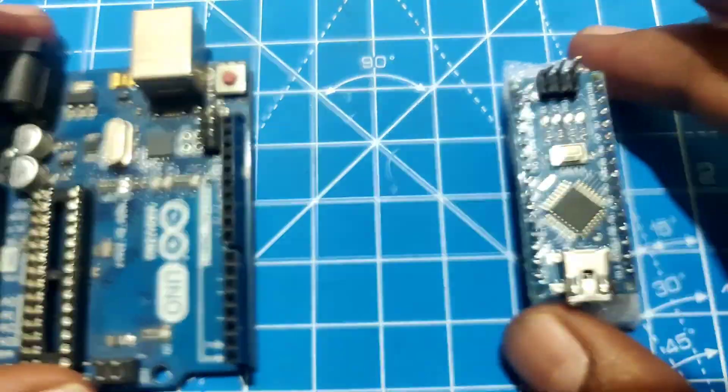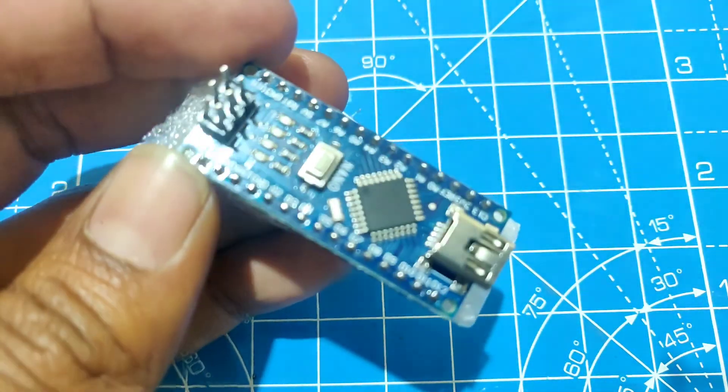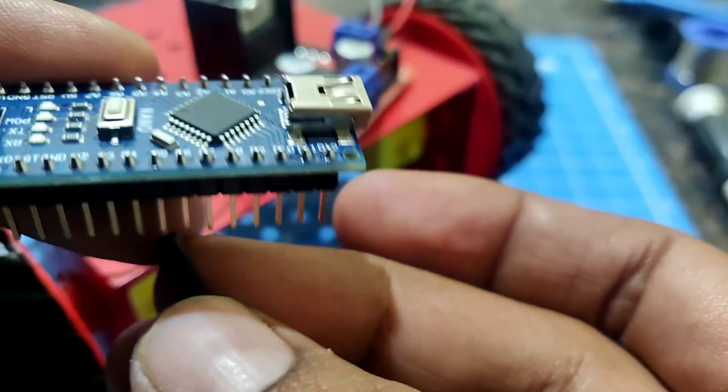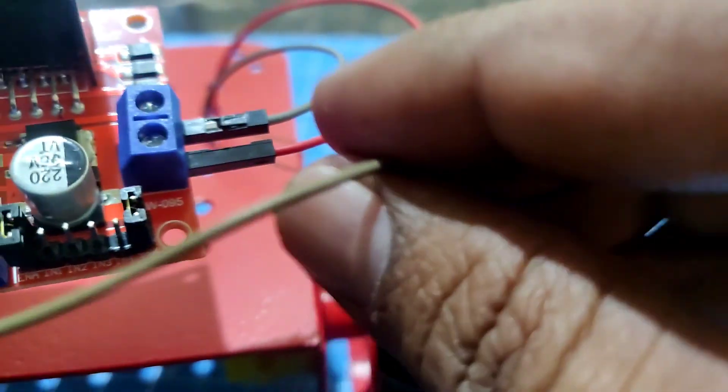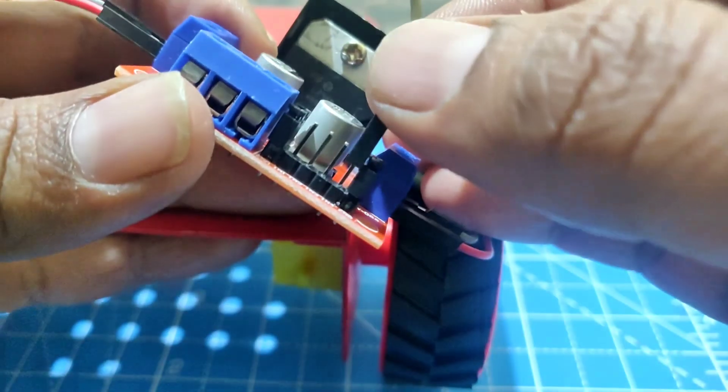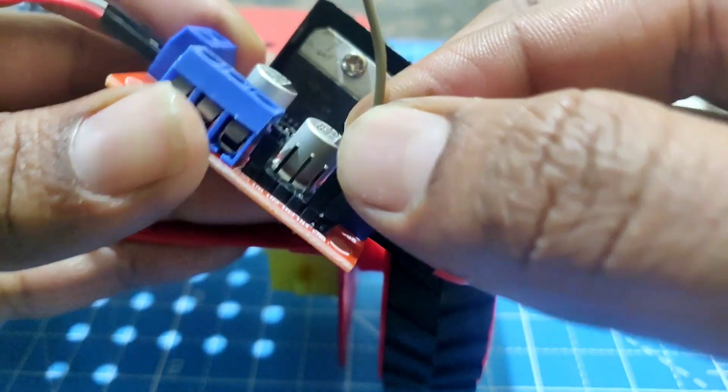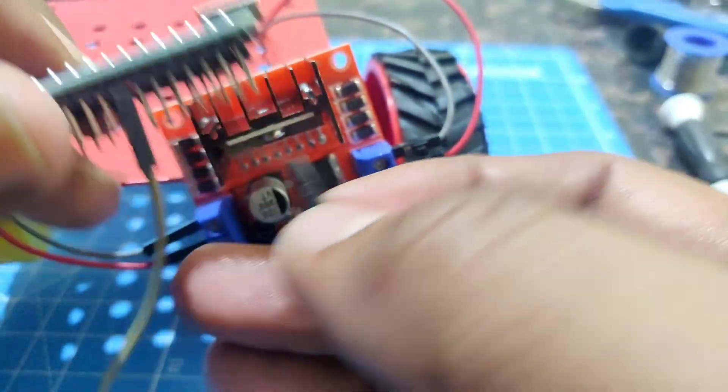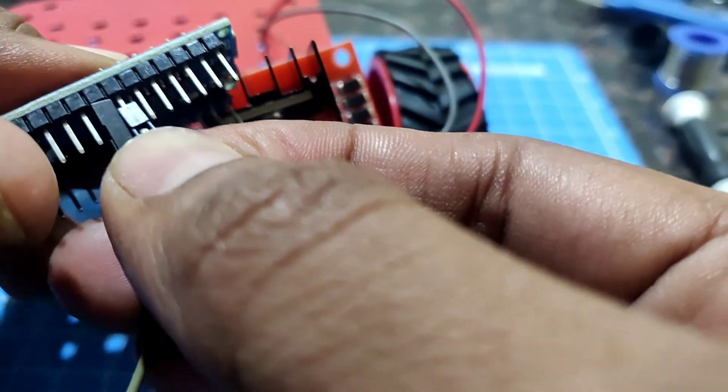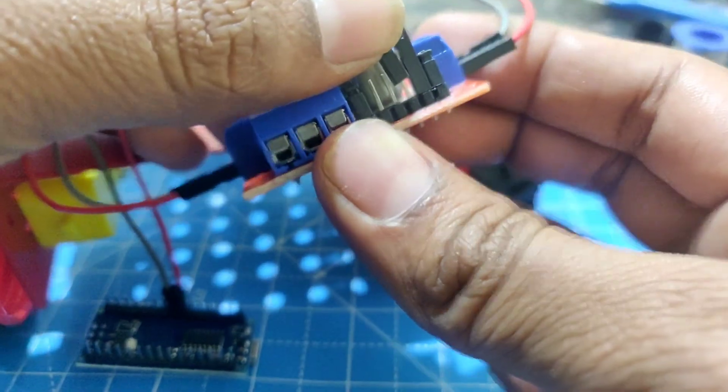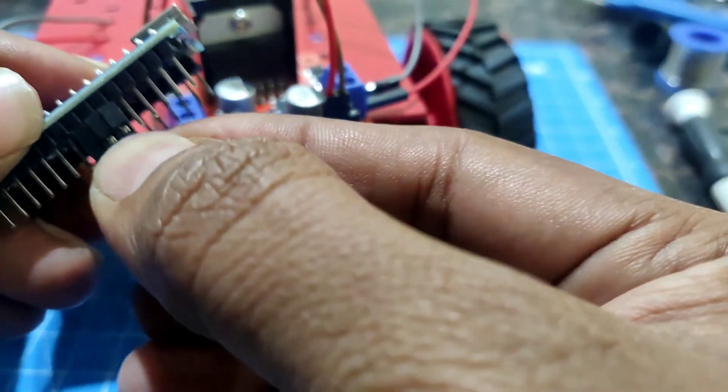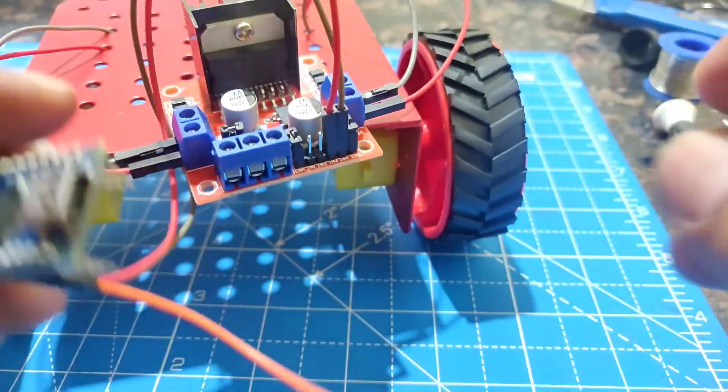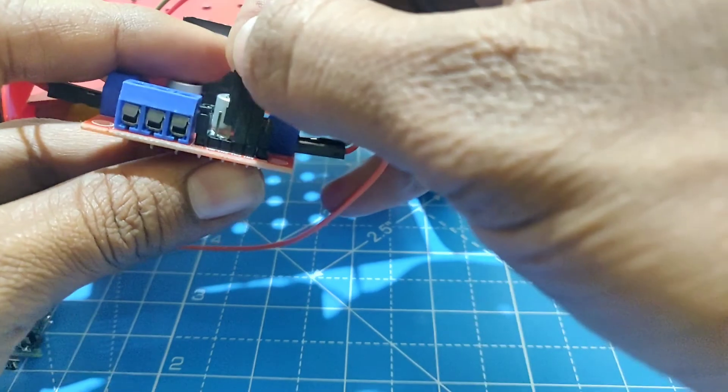Take Arduino Nano. You know I am using this Arduino Nano in this project. Connect D5 pin of Arduino Nano to IN4 pin of the driver module. Similarly, connect D6 to IN3. Connect D7 to IN2 and D8 to IN1.